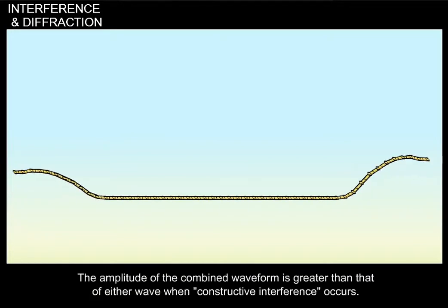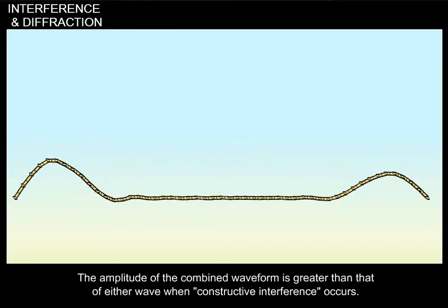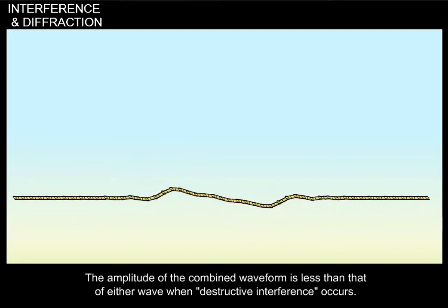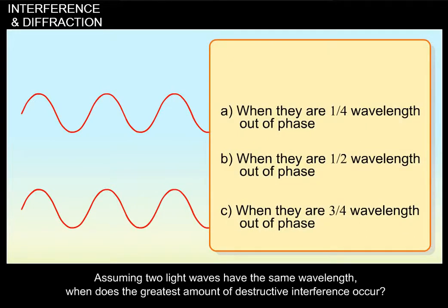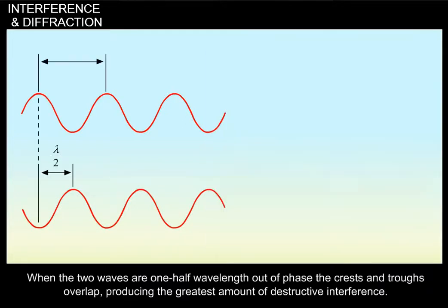The amplitude of the combined waveform is greater than that of either wave when constructive interference occurs. The amplitude of the combined waveform is less than that of either wave when destructive interference occurs. Assuming two light waves have the same wavelength, when does the greatest amount of destructive interference occur? Correct. When the two waves are one-half wavelength out of phase, the crests and troughs overlap, producing the greatest amount of destructive interference.